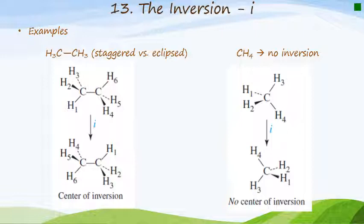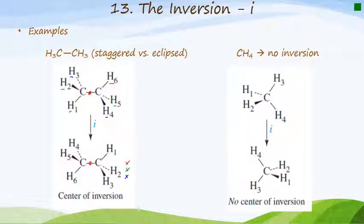Here is the example comparing ethane with methane. The diagram on the left shows there is a center of inversion right here. H1 and H6 swap places, H2 and H5 swap places, and H3 and H4 swap places in the bottom diagram. That must mean there is a center of inversion, and it sits right in the center between the two carbon atoms — but only for the staggered version of ethane.